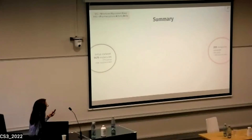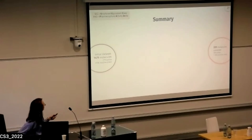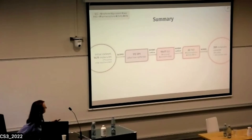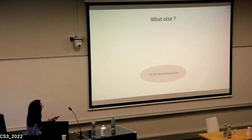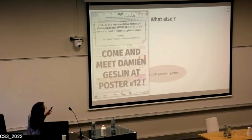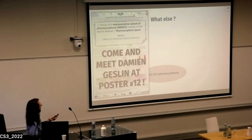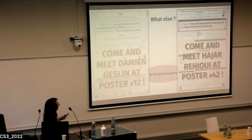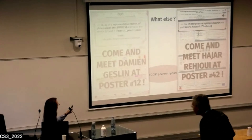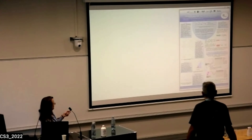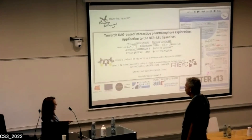To summarize: starting from an initial dataset of 1,400 molecules, we landed on fewer than 300 molecules to study through pharmacophore generation, reduction via the directed acyclic graph, and computation of the Pharmacophore Activity Delta. We have also studied representative subsets of pharmacophores — for details, see poster number 12 and PhD student Damien — and developed new pharmacophore descriptors, available at poster 42. Further questions are welcome at my poster, number 13. Thank you.